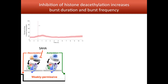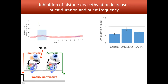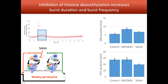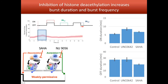We then used SAHA, which is a deacetylation inhibitor. We predicted a similar effect — no change in off duration but an increase in on duration. However, the results showed a small but significant increase in on duration as expected, and also a decrease in off duration. This means that when histones are hyperacetylated due to inhibition of deacetylation, it is also easier to transition from the off state back to the on state — indicating our hypothesis is incomplete and the process is more complex. The next experiment will use NU9056, an acetylation inhibitor, where I expect to see the opposite: a longer off duration but no change in on duration.